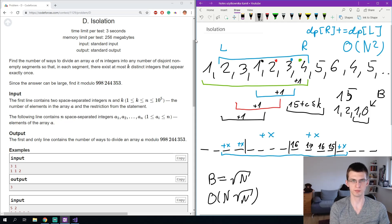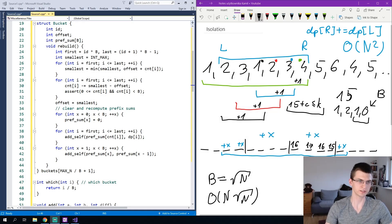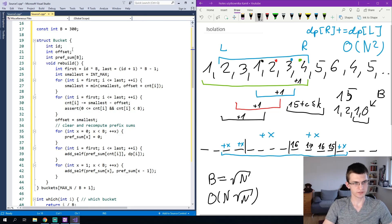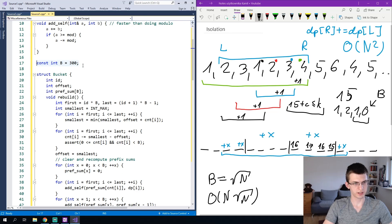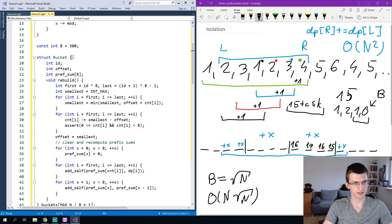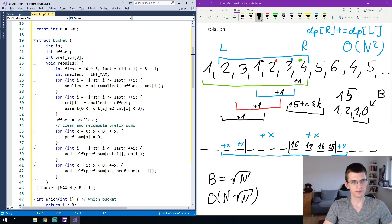Now let's see the implementation of this solution to clear some details. Again, the code is in my github repository, link in the description. I created a struct for every bucket, I chose b equal 300, what is around n square root of n, and then bucket has id, I needed that for some reason, offset and an array for prefix sums. If I know id, then the range of indices for which this bucket is responsible is from id times b to id plus 1 times b.